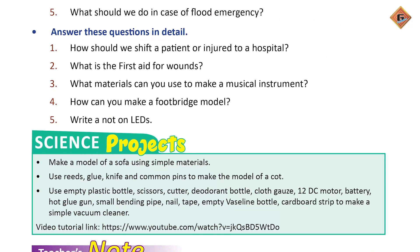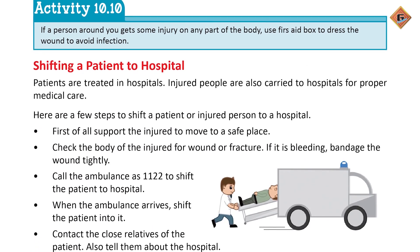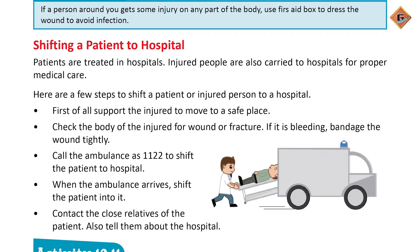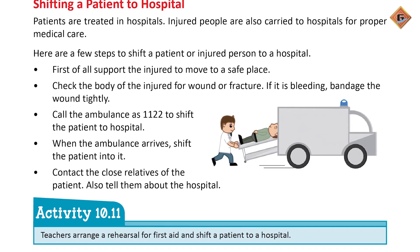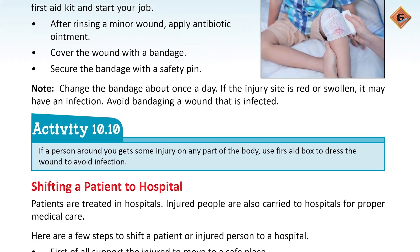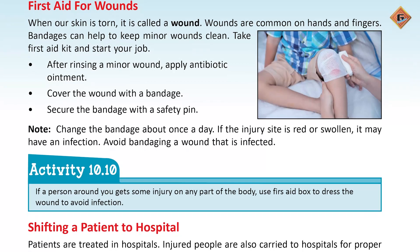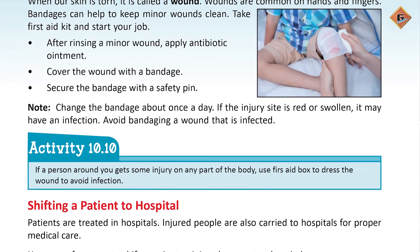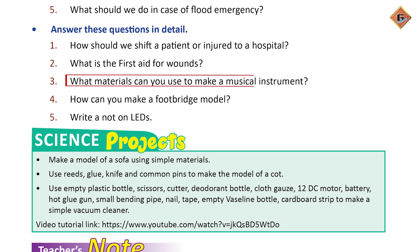Ab detailed answers dekhte hain. How should we shift a patient or injured person to a hospital? Aapne first aid ke topic ke andar yeh bhi padha tha ki kis tarah se shift karna hai — woh saare points is question ke answer mein likh dene hain. What is the first aid for a wound? Sabse pehle clean karna tha, uske baad cover karna tha bandage se, aur phir safety pin se safely secure kar dena tha.